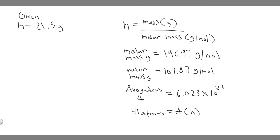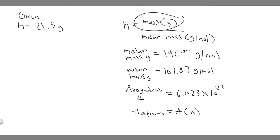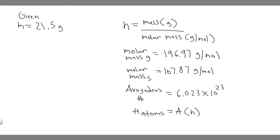So how are we going to do this? The first thing we want to do is find the number of moles, and that's going to allow us to find the number of atoms. The number of moles requires the mass — in this case, it's going to be 21.5 for both of them. Then you divide by the molar mass, and that's dependent on the type of material.